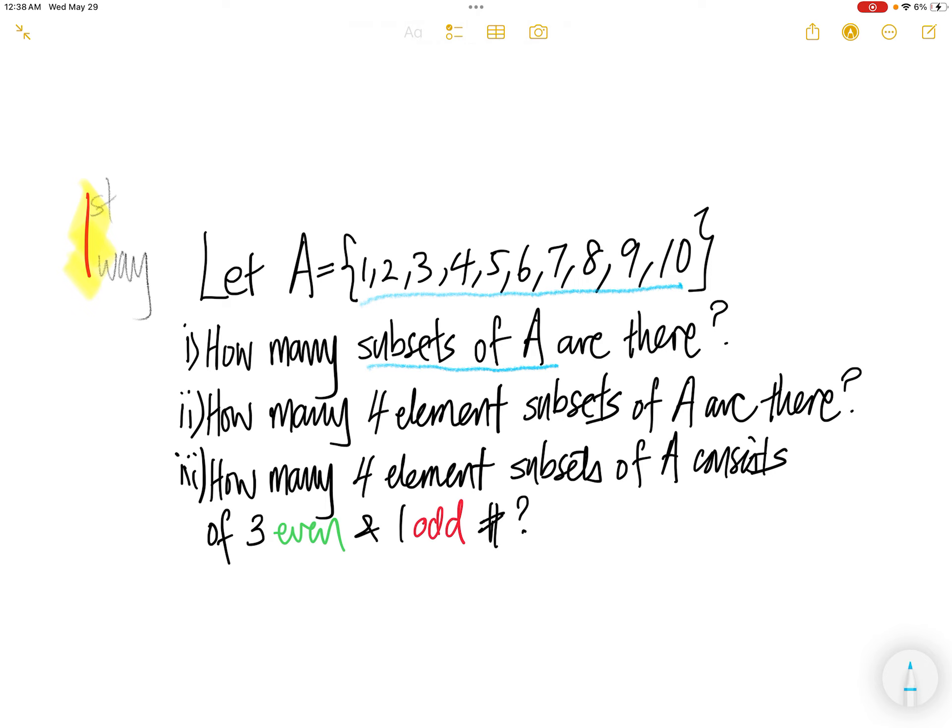How many subsets of A are there? Part 2, how many 4 element subsets of A are there? Part 3, how many 4 element subsets of A consists of 3 even and 1 odd number?